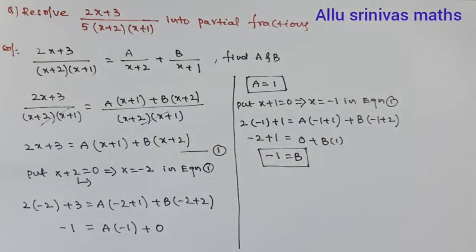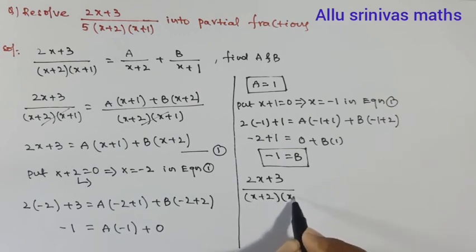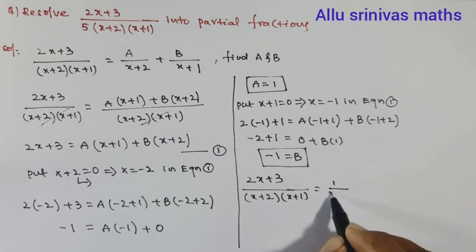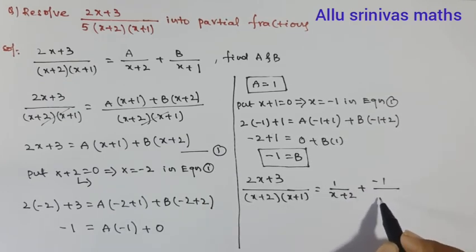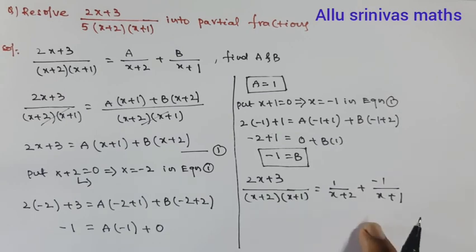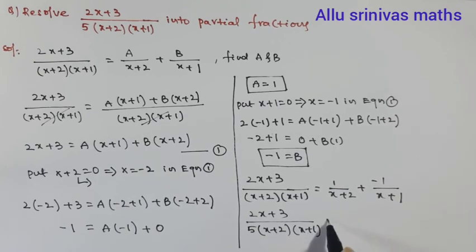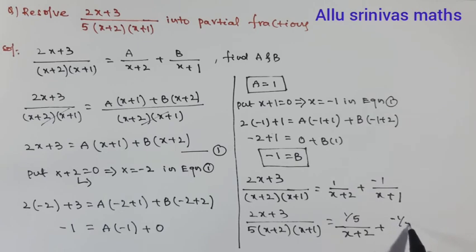So A is replaced by 1 and B is replaced by −1, substituted in the form: (2x + 3) / [(x + 2)(x + 1)] = 1/(x + 2) + (−1)/(x + 1). But this is not the final answer, because each partial fraction must be multiplied by 1/5. Therefore for the given problem, (2x + 3) / [5(x + 2)(x + 1)] = 1/[5(x + 2)] − 1/[5(x + 1)]. Thank you.